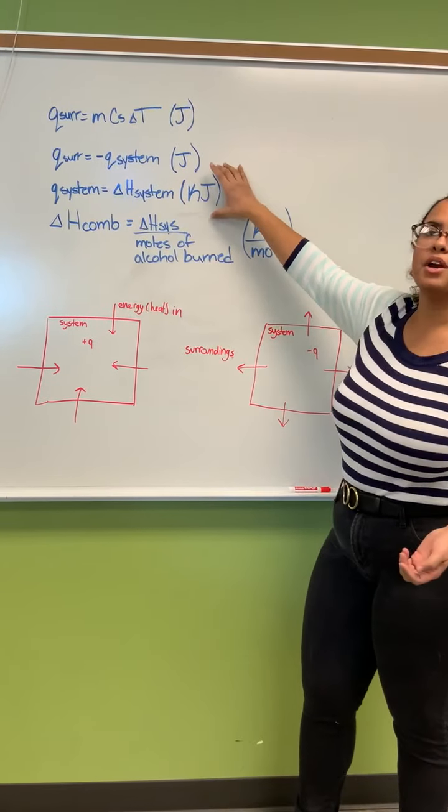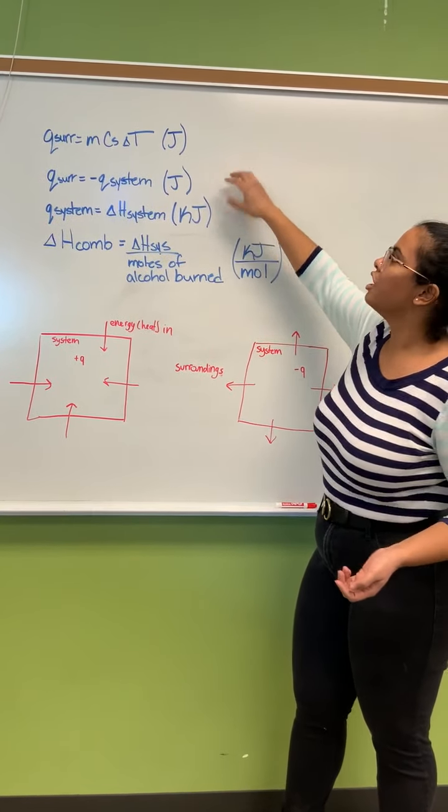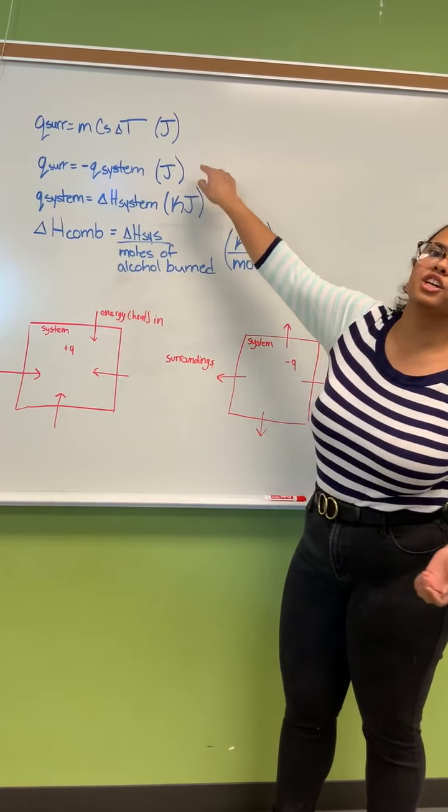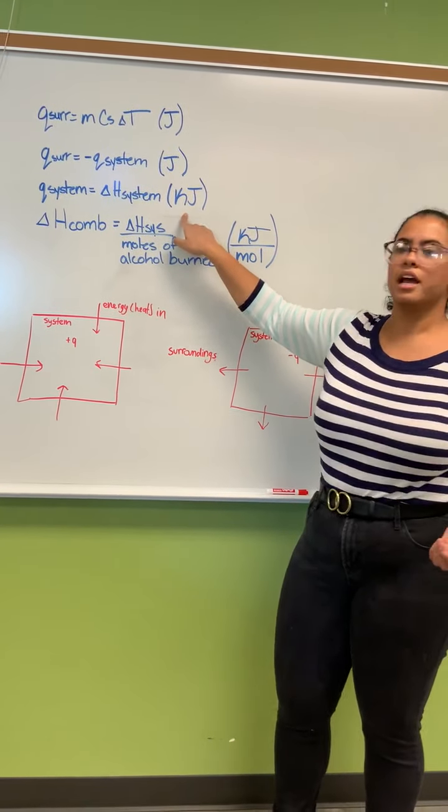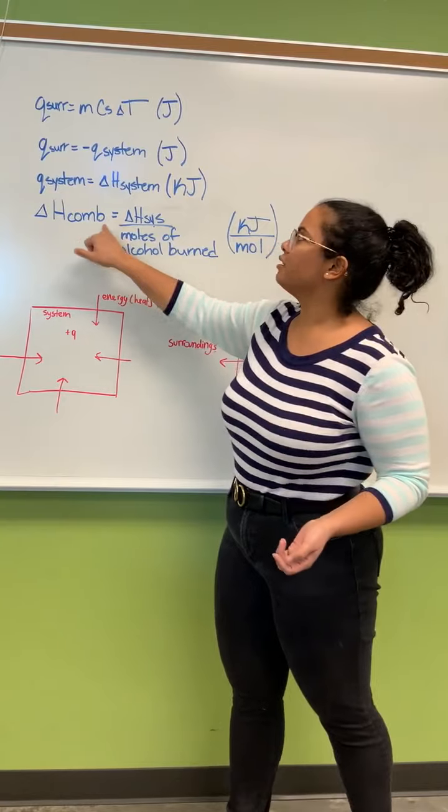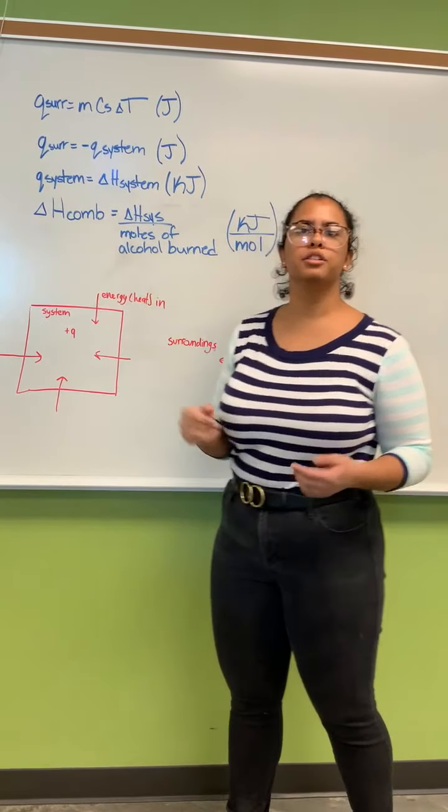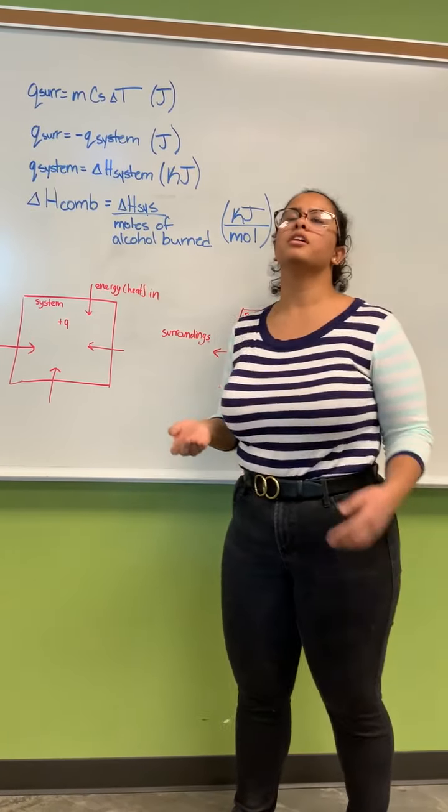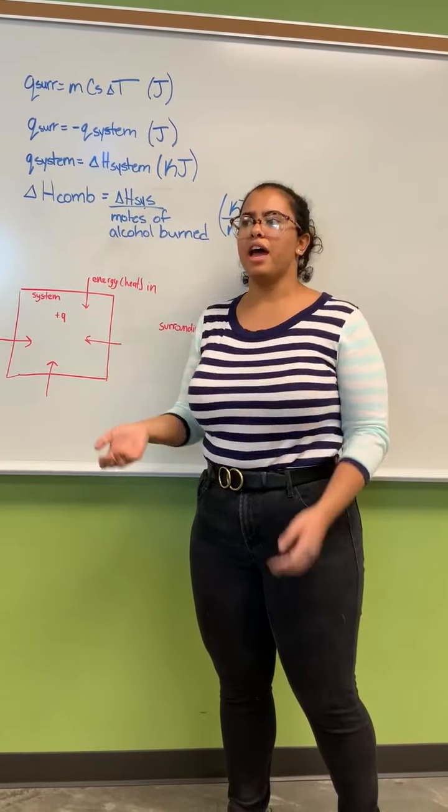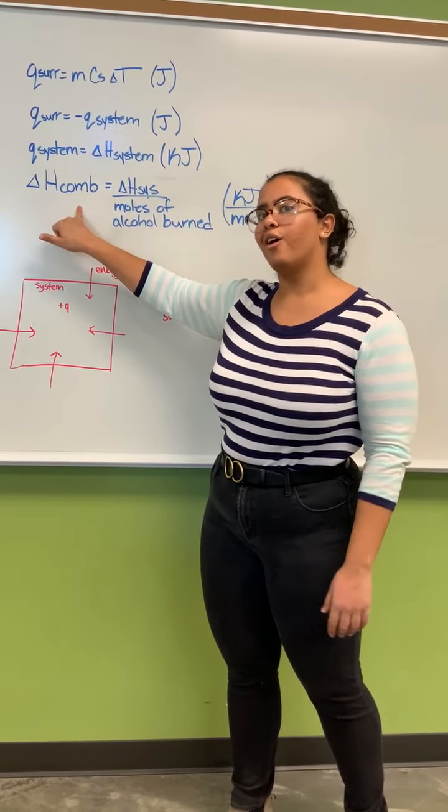This number has to be in kilojoules, so whatever you have here you need to convert it to kilojoules. And finally, this is what we actually want to find out - we want to find out the change of enthalpy of combustion for each alcohol.